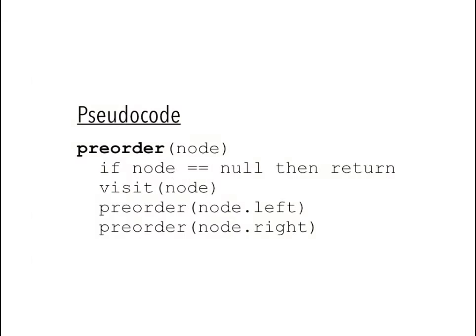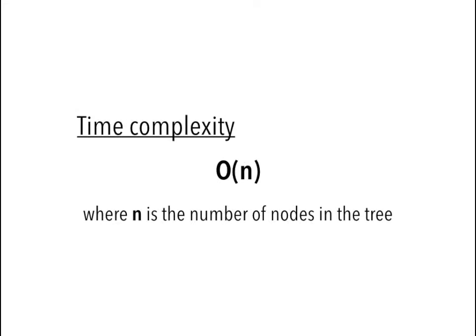Here's the pseudocode for pre-order tree traversal. The time complexity is O(n) because we call visit on each node exactly once.